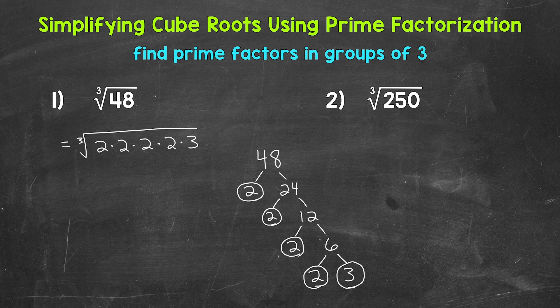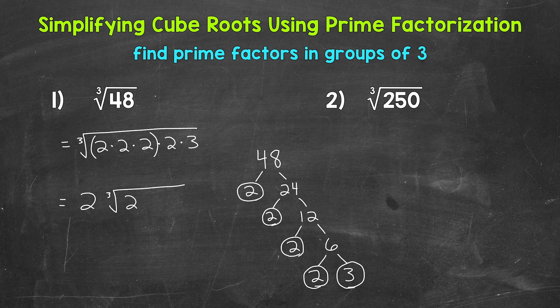Now we need to find prime factors in groups of 3. We have a group of three 2's right here — that represents a perfect cube that we can pull out. 2 times 2 times 2 equals 8, and the cube root of 8 is 2, so let's pull out a 2. This gives us 2 times the cube root of 2 times 3. We still have that 2 times 3 under the cube root symbol. We cannot simplify any further, so let's multiply: 2 times 3 equals 6. So we end up with 2 times the cube root of 6.